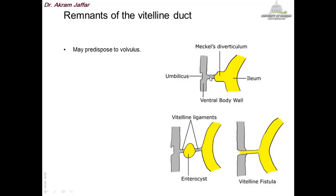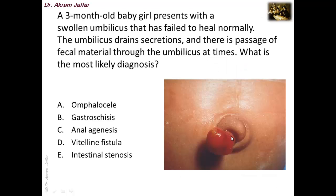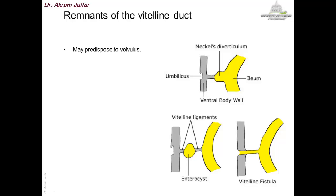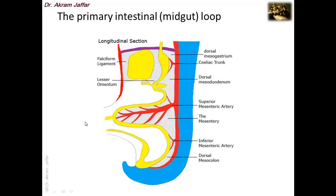Sometimes a fibrotic cord connects the remnant to the umbilicus, which may predispose to volvulus — twisting of the intestine on its mesentery — a dangerous condition that causes obstruction and may compromise blood supply, resulting in ischemia and infarction. Other varieties include cyst formation within the remains of the vitelline duct, or a fistula communicating with the outside via the ileum, as seen in this case of failure of complete obliteration of the vitelline intestinal duct.